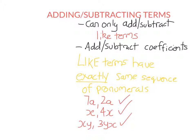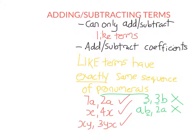Let's look at examples of terms that are not like terms. If we have something like 3 and 3b, they are not like terms — one of them has a b, one doesn't. It doesn't matter that the numbers are the same; they have to have the same pronumerals. If I had two terms ab and 2a, again they are not like terms — one of them has a b, one does not. They do not have the same letters. And if I had something like 4xyz and negative 5xy, once again they are not like terms. The first term has a z, the second term does not. They don't have the same pronumerals and therefore they are not like terms.